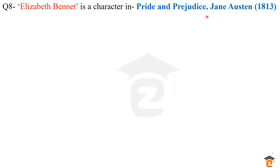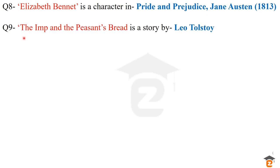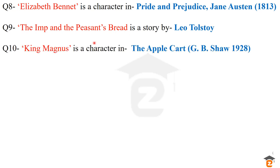Question number 9: The Imp and the Peasant's Breed is a story by Leo Tolstoy. Leo Tolstoy was a Russian writer and his most important novel was War and Peace. Question number 10: Magnus is a character in Apple Cart by G.B. Shaw — George Bernard Shaw was the writer of this play Apple Cart, published in 1928.